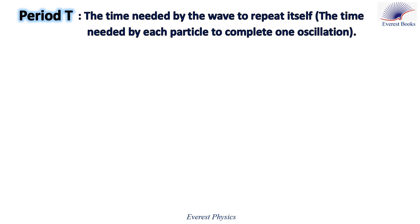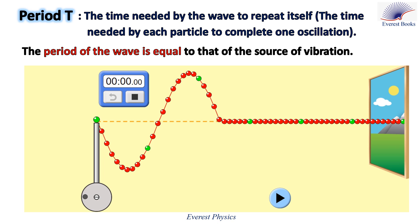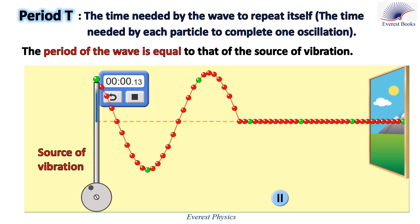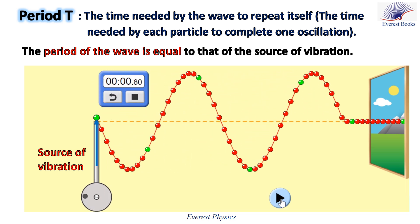The second property is the period which is the time needed by the wave to repeat itself and it equals to the time needed by each particle to complete one oscillation. The period of the wave is equal to that of the source of vibration. Observe this animation. Consider a wave propagating along a rope. Now let's start the animation. We notice that in a time of 0.8 seconds, the wave repeats itself. The source of vibration and this particle complete one oscillation. That means the period of this wave is 0.8 seconds.